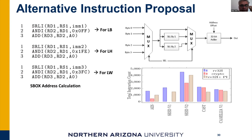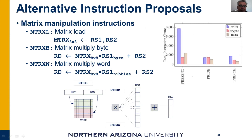We then started looking — and this is still work in progress — at alternative instructions. We can combine some instructions, like shift and add. If we had a single special instruction for load half-word or load byte operations, you can see the additional reduction shown in the brown bars. We are also looking at a matrix manipulation instruction which would essentially replace the greve, unshuffle, and similar instructions.